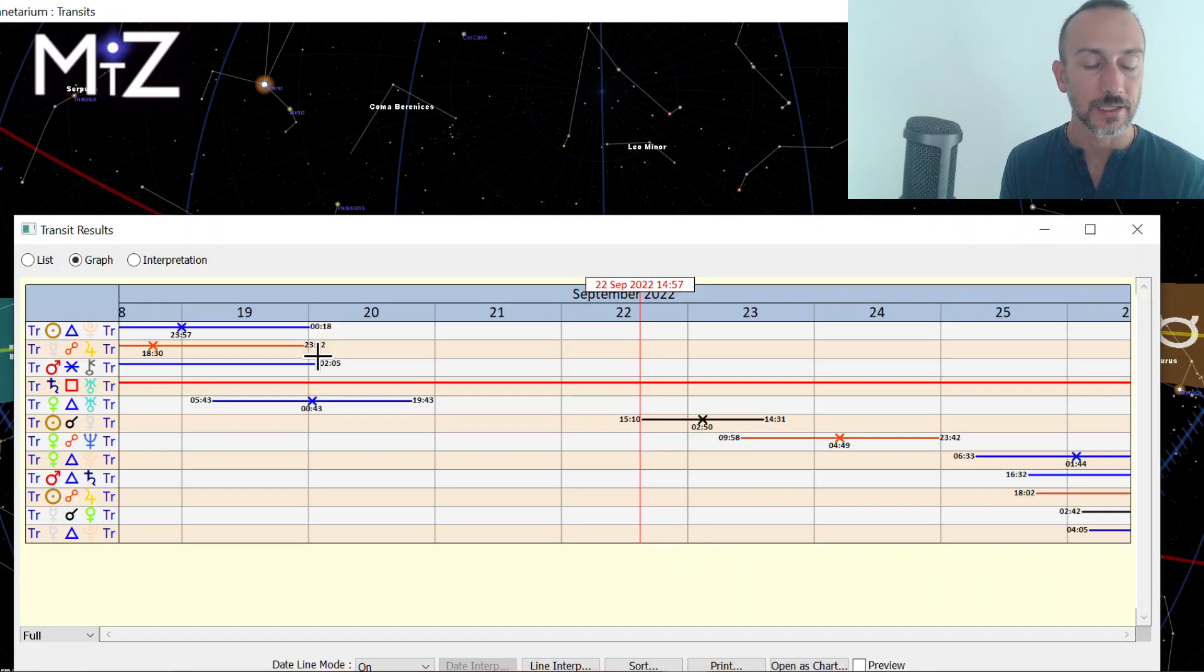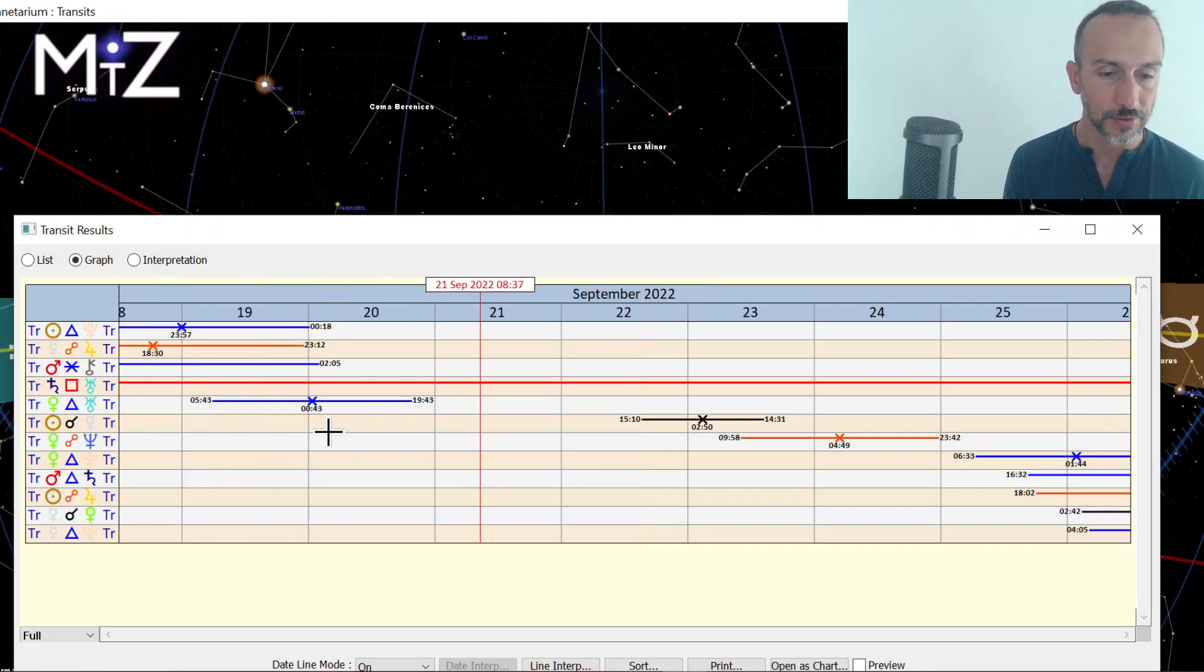One thing I did want to mention is that Saturn and Uranus are getting close to their square. This square already happened last year in 2021, when Saturn, the planet of structure, was clashing or squaring with Uranus, the planet of freedom and change.